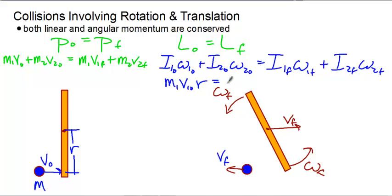So on the problem we would say M1 times V1 naught times R equals, for this case, the rod being rotated about its center. The I value is one-third mass of the rod times length of the rod squared times omega of the rod final, plus the mass that's moving times its final velocity times R again.